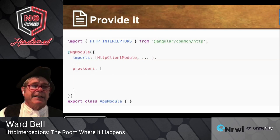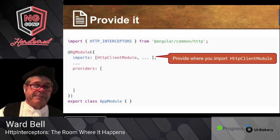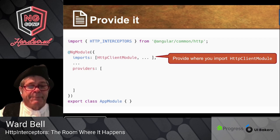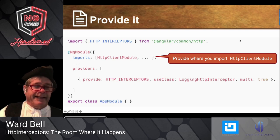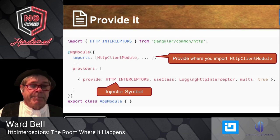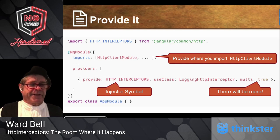Interceptors are not just classes — they're injected services, so you have to provide them. You can't just throw an @Injectable on it as you'll see. You have to provide it in a very specific place: at the same injector level where you import the HttpClientModule, which for many people is AppModule. You're using a different kind of providing — an injector token — and there's this multi: true property, because you're not providing a single service but an array of services.